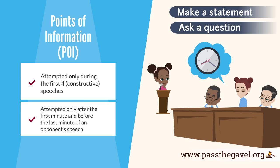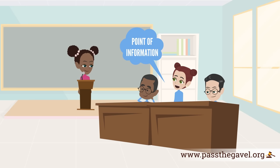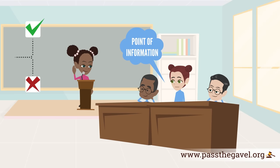POIs may be attempted only after the first minute and before the last minute of an opponent's speech. The first minute and last minute of constructive speeches are referred to as protected time, and no POIs are allowed. A debater attempts a POI by standing, or by standing and saying 'POI,' or by saying 'point of information.'